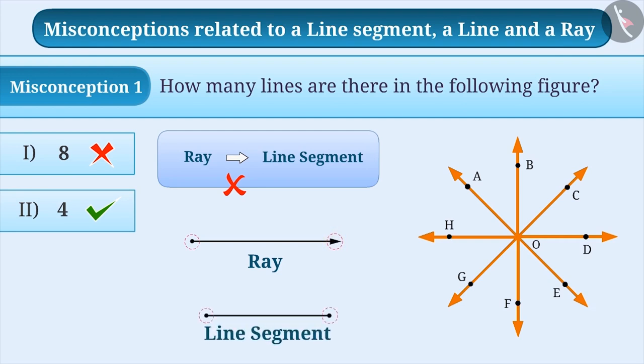The starting and ending points of a line segment are fixed. That is why, points are made at both ends of a line segment. Since a ray extends to infinity, its length is not fixed. But a line segment has a fixed length. Therefore, we can say that ray cannot be a line segment.